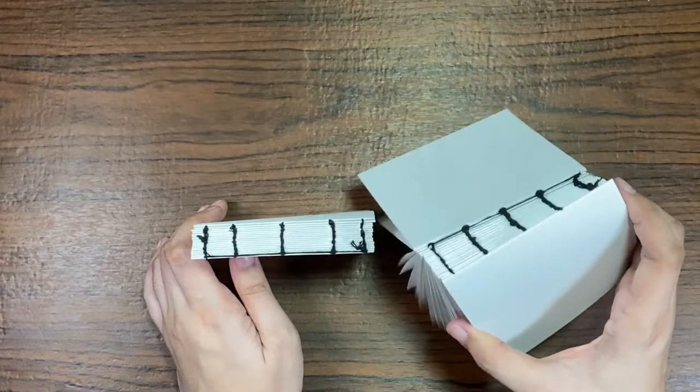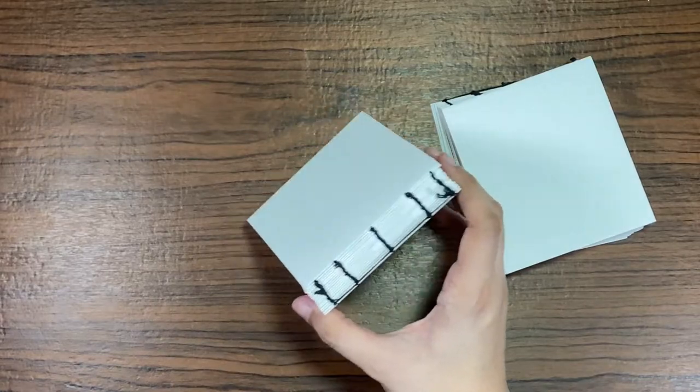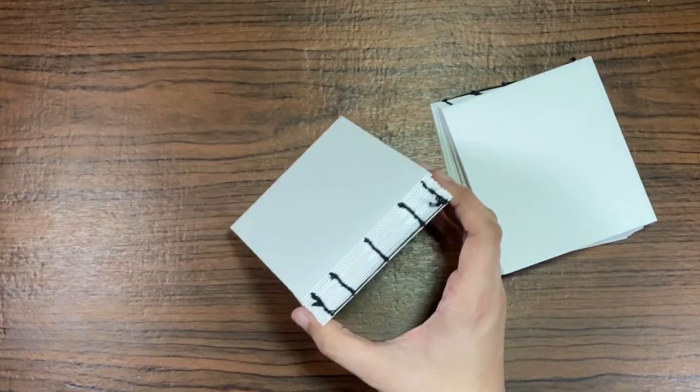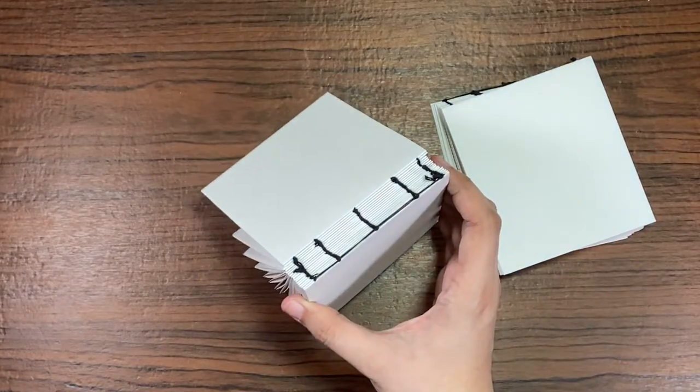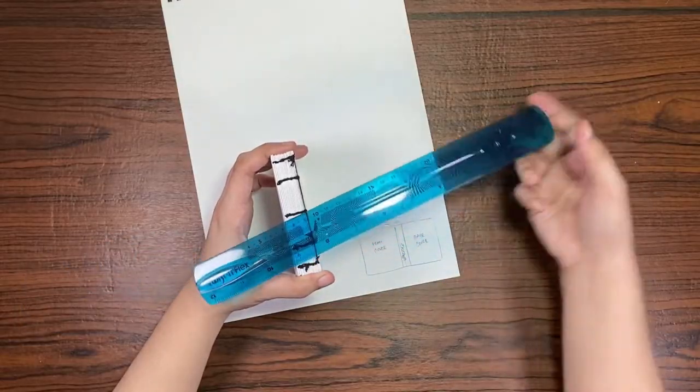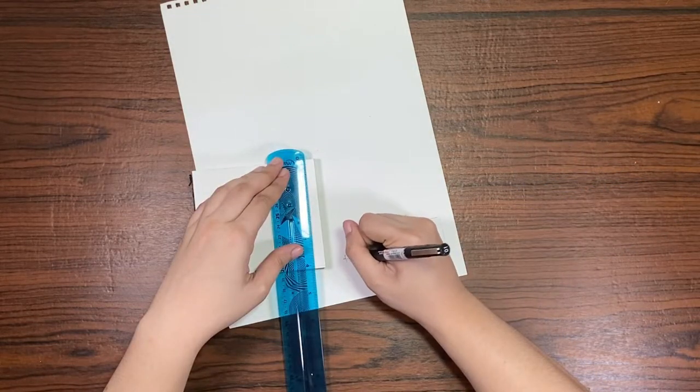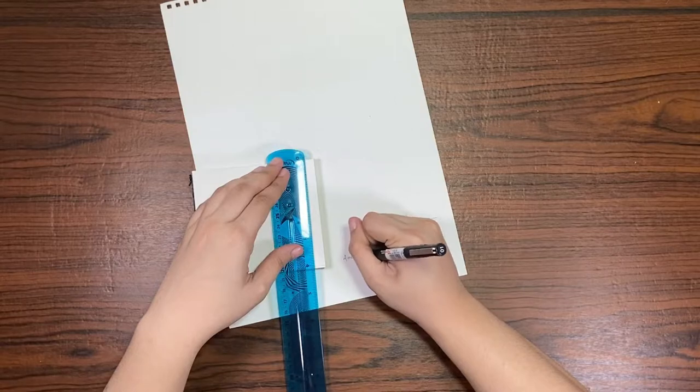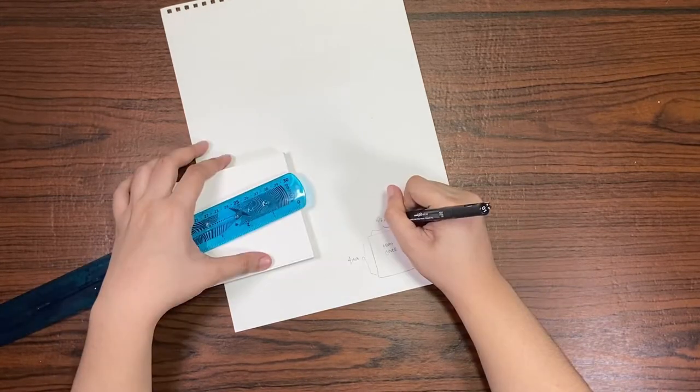But you have to be careful when sewing them together too tightly because you might tear the paper, and you really don't want that to happen. Now I'm just getting the measurements of the spine and the height and the width of the sketchbook because we're about to do the cover.